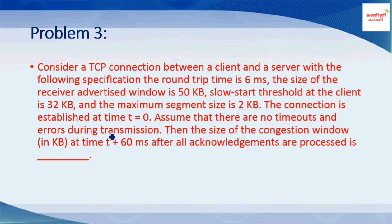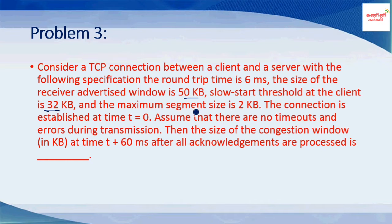Problems 3 and 4 involve a TCP connection between a client and server. The round trip time (RTT) is 6 milliseconds. The receiver's advertised window is 50 KB. TCP congestion control uses slow start; the initial slow start threshold is 32. Each segment size is 2 KB. The connection is established at time 0, and there are no timeouts.